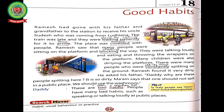The place was crowded with people — underline 'crowded,' write down the meaning: overfill. Ramesh saw that many people were sitting on the platform and blocking the way — underline 'blocking,' write down the meaning: choking. Students, as we all know, a railway station is a crowded place with many people.